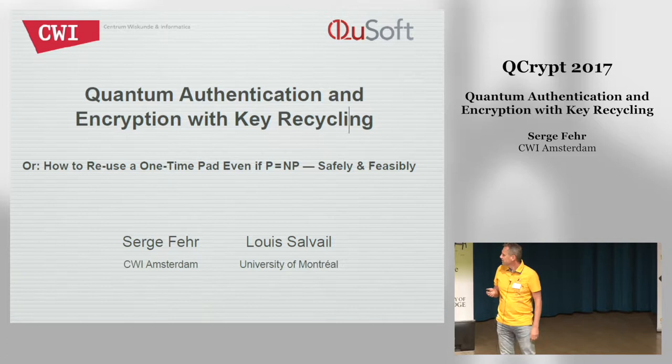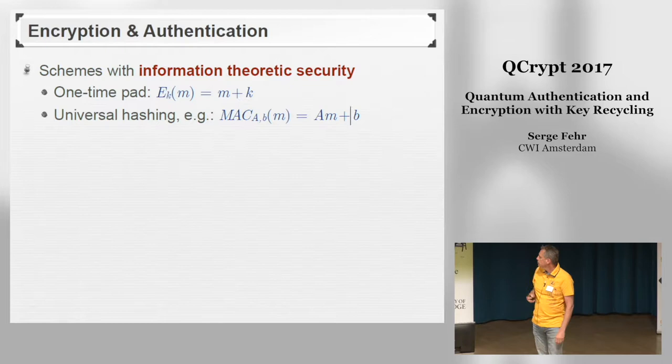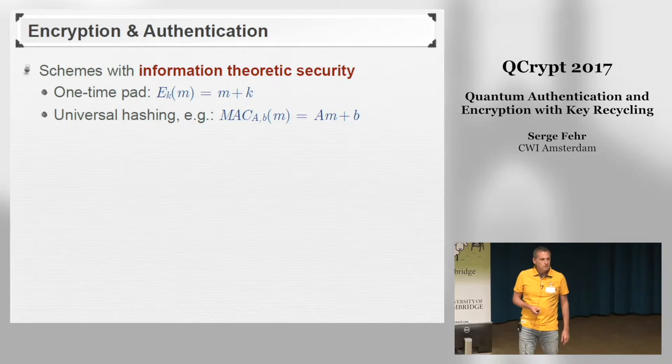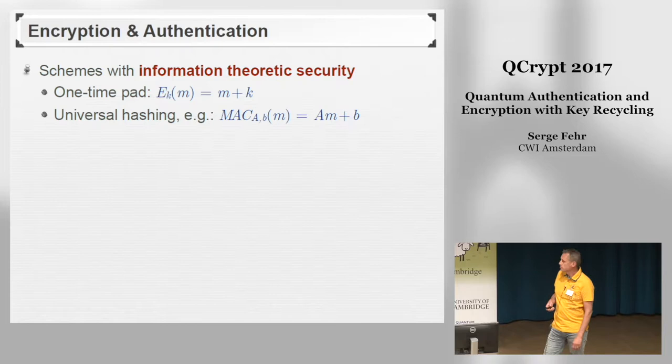This is a joint work with Louis Salval from the University of Montreal. I'm going to talk about encryption and authentication with information-theoretic security. A typical example of such an encryption scheme is the one-time pad that we all know. Authentication, on the other hand, can be done by means of universal hashing, and this is the typical choice of such a universal hash function.